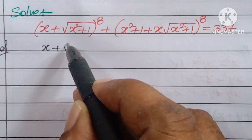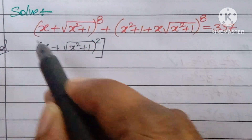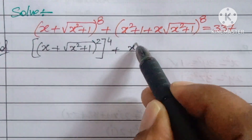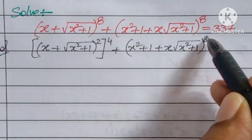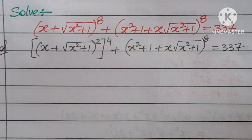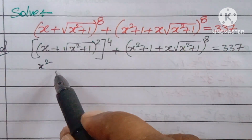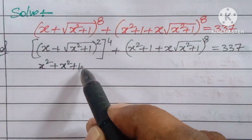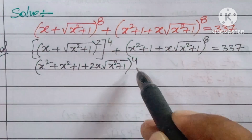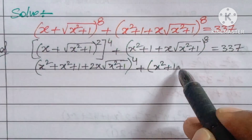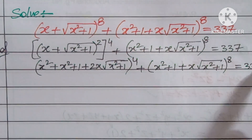The method I am going to use: rewrite x² + √(x² + 1) as a whole square to the power of 4. The second term, x² + 1 + x√(x² + 1), remains to the power of 8. Expanding the first part gives x² + x² + 1 + 1 + 2x√(x² + 1), plus x√(x² + 1) to the power of 8, equal to 337.